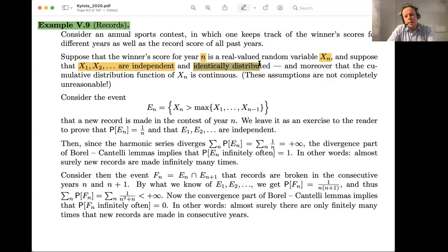We assume that these scores are identically distributed. So if we assume that there's no development of new medication, for example, for the athletes that makes them perform better, we assume that they are kind of standard, behaving in an identically distributed manner.